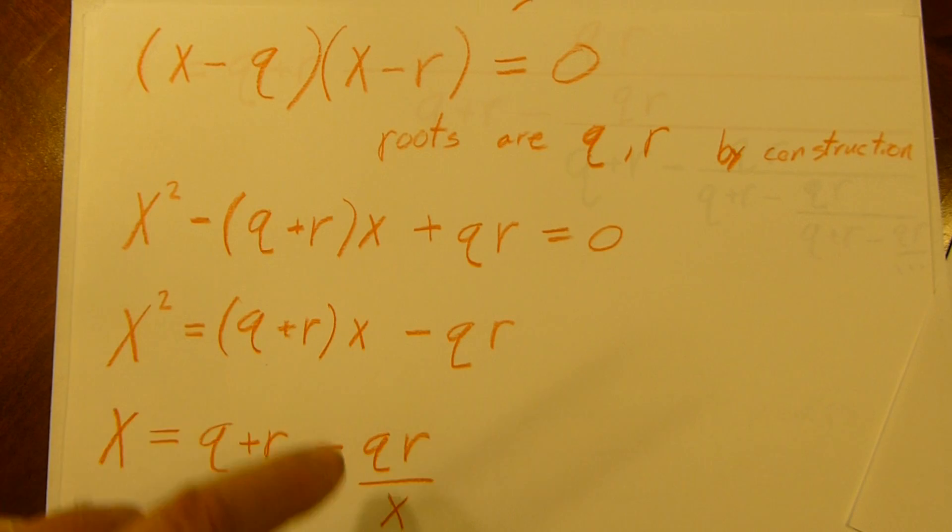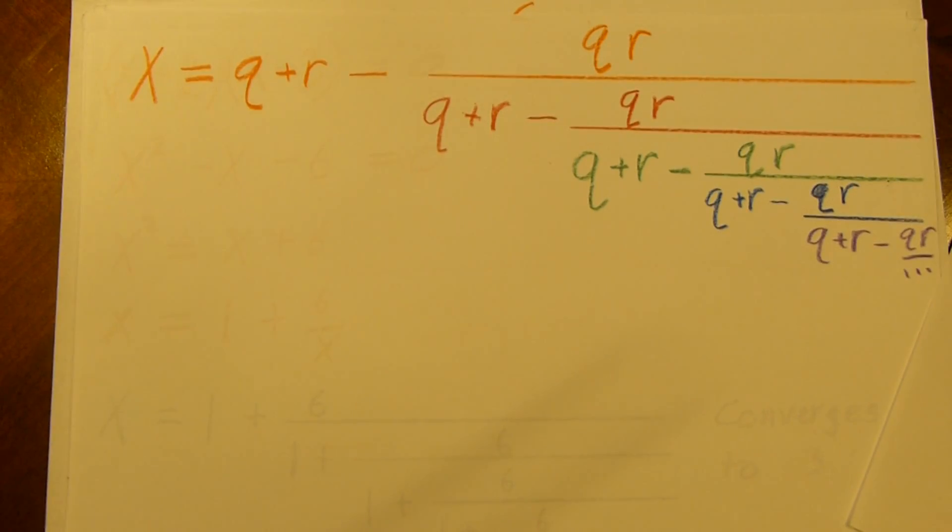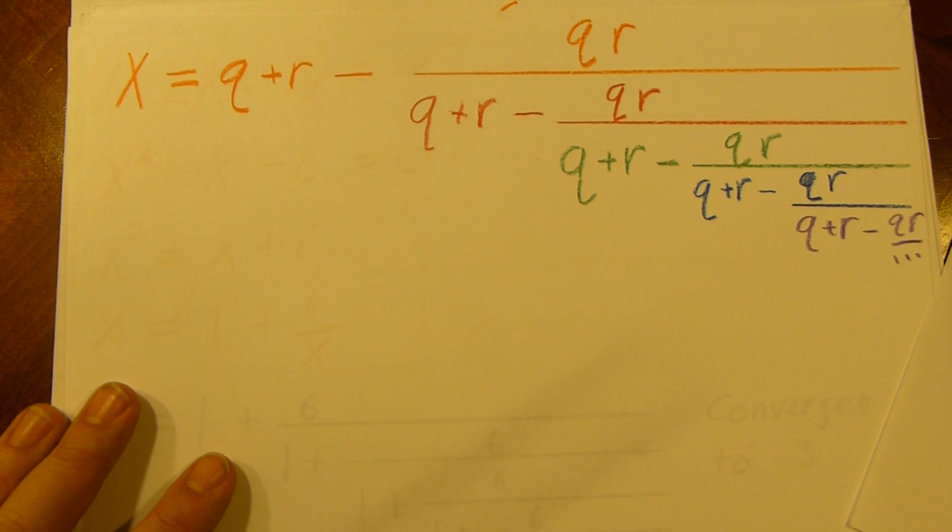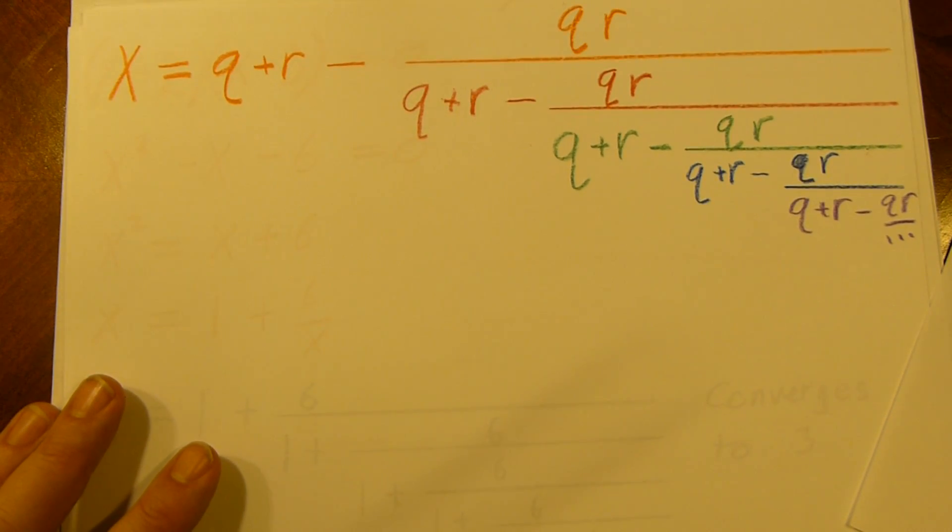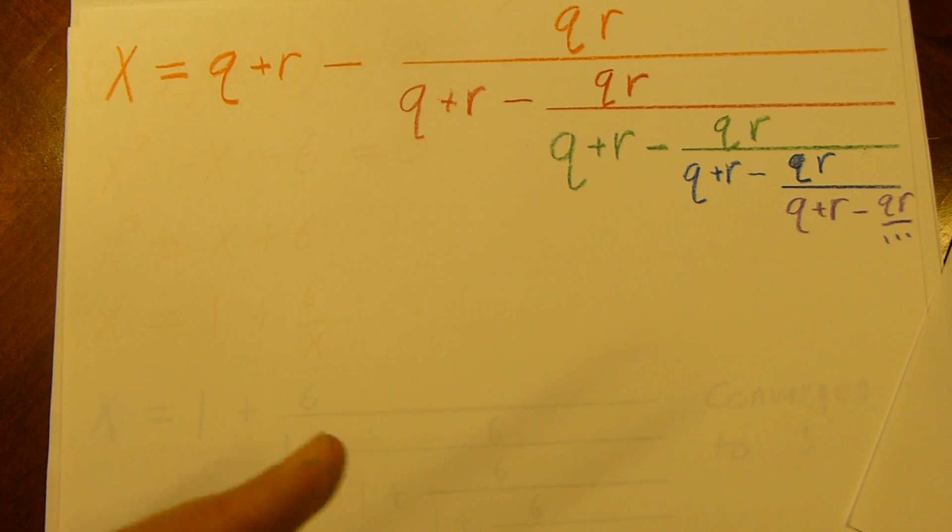So we get x equals q + r minus qr over x. Okay, pretty straightforward. We know what x is because x is this. So we just plug everything here back into here again. And we get something like this. So x equals q + r minus qr over... Don't make me say the whole thing. You don't want me to go there. But you see it going on forever.